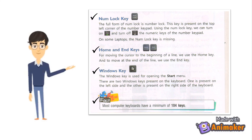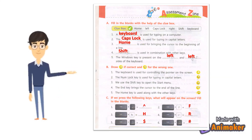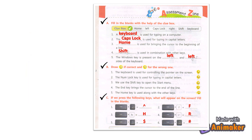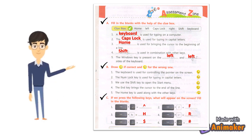Fact: Most computer keyboards have a minimum of 104 keys. Exercise: A — Fill in the blanks with the help of the clue box. B — Draw a tick for correct and a cross for the wrong one. C — See if we press the following keys, what will appear on the screen. Fill in the blanks.